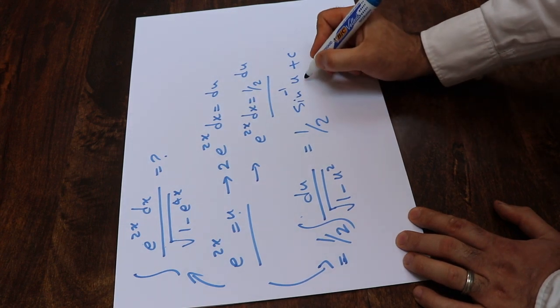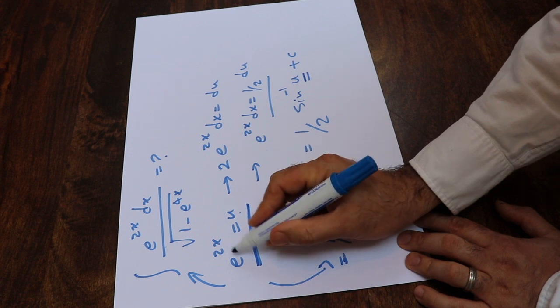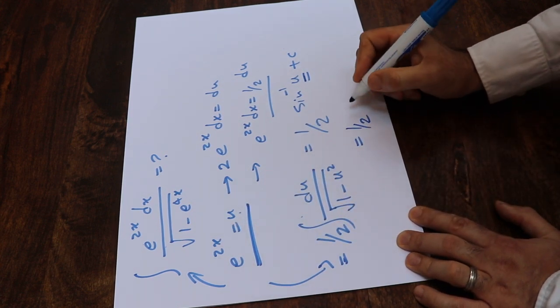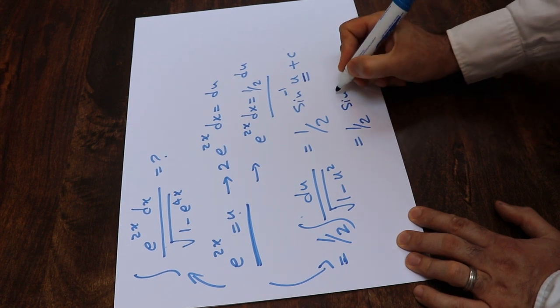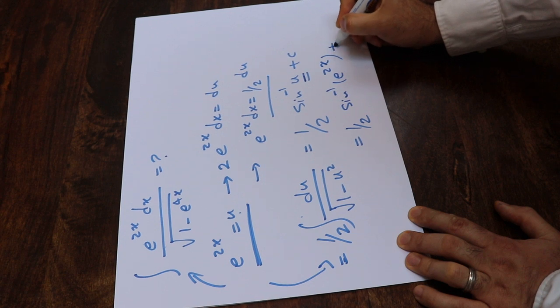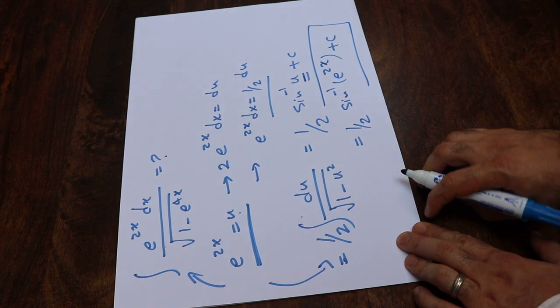So all you need to do at this stage is to substitute this parameter u with the definition of u, which is e^(2x). Therefore, this will be equal to 1/2 times sin^(-1)(e^(2x)) plus c, which is the constant of integration. And that is the solution of this integral.